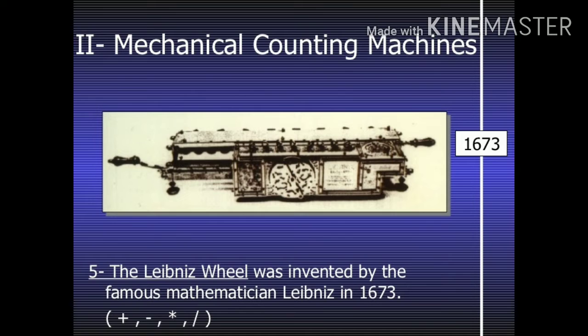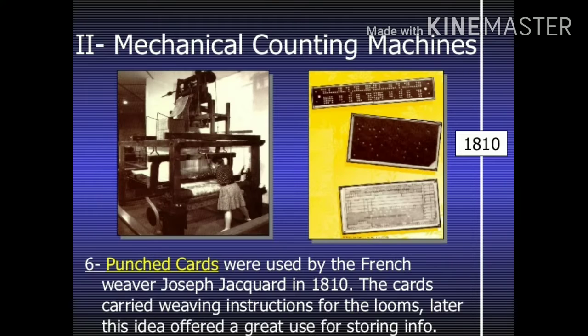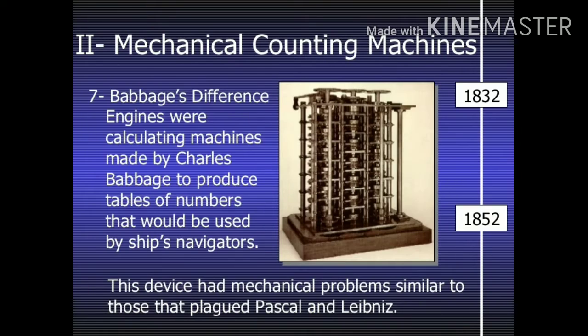It is said that this computer weighed 30 tons and had 18,000 vacuum tubes used for processing. When this computer was turned on for the first time, lights dimmed in sections of the surrounding area. Computers of this generation could only perform a single task and had no operating system.